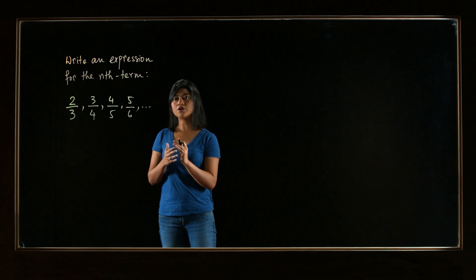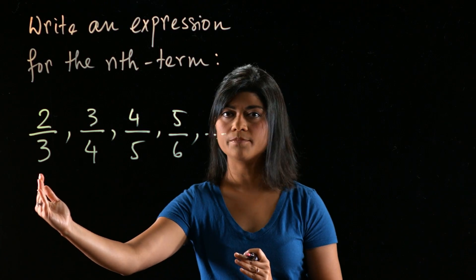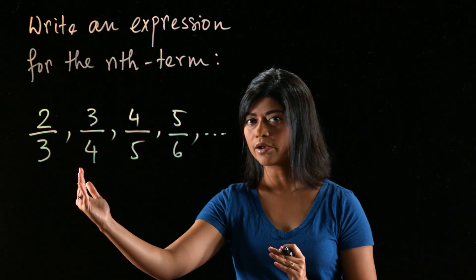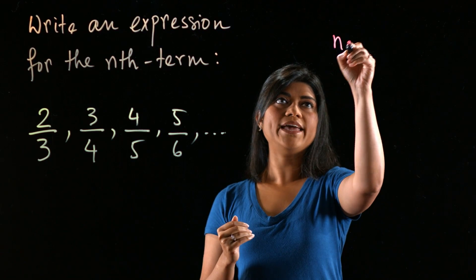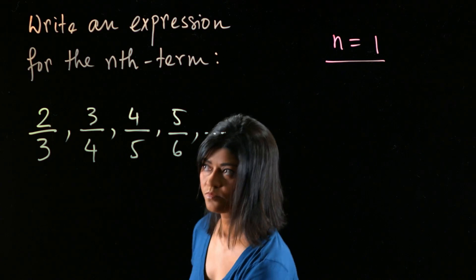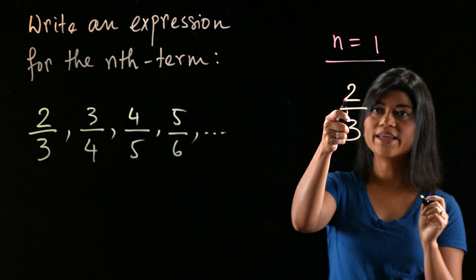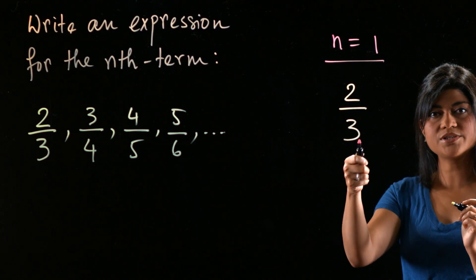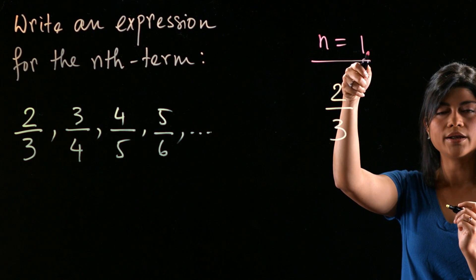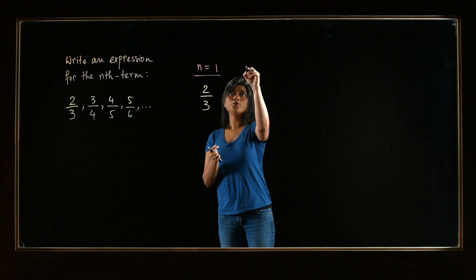This is how you should start the problem. You should start thinking that my first term is for n equals 1. So when n is 1, then my term is 2/3. The idea is, how can I write these numbers in terms of 1? And then, let's do one more quickly.